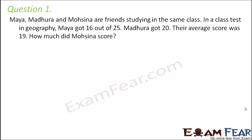Question number 1. Maya, Madhura and Mohsena are friends studying in the same class. In a class test in geography, Maya got 16 out of 25, Madhura got 20. Their average score was 19. How much did Mohsena score?